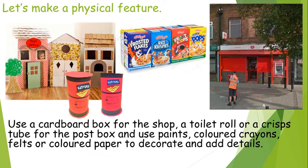Useful things to have: glue, tack, sellotape. If you don't have those, just turn the cereal box inside out and you can colour straight onto the back of the cardboard — that's a tip I've used before. So yeah, have fun making your human feature, our post office!